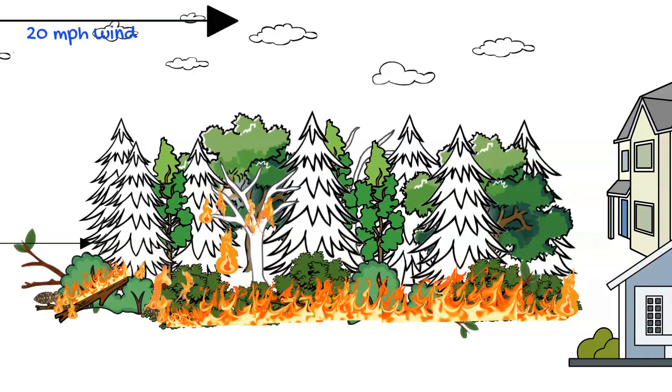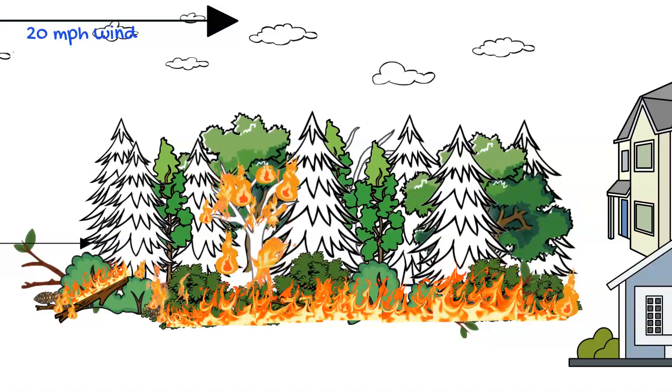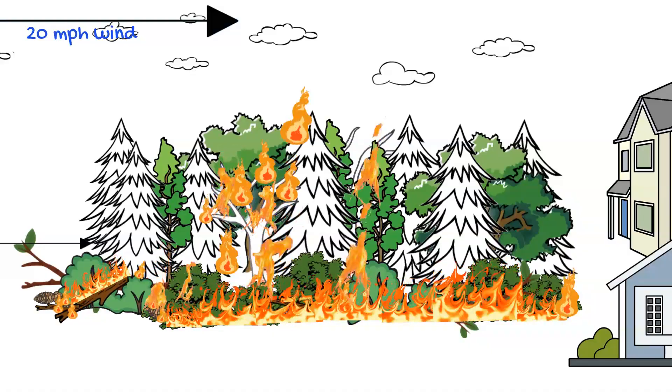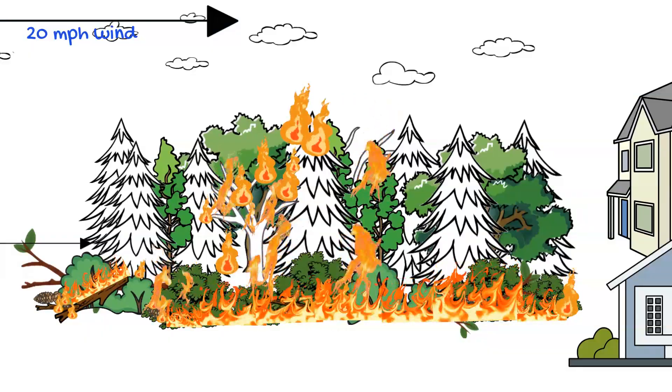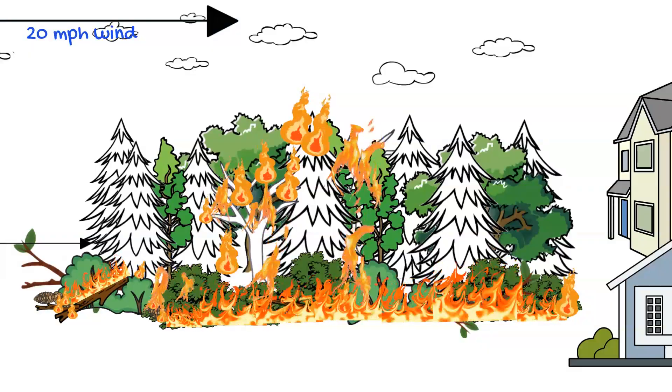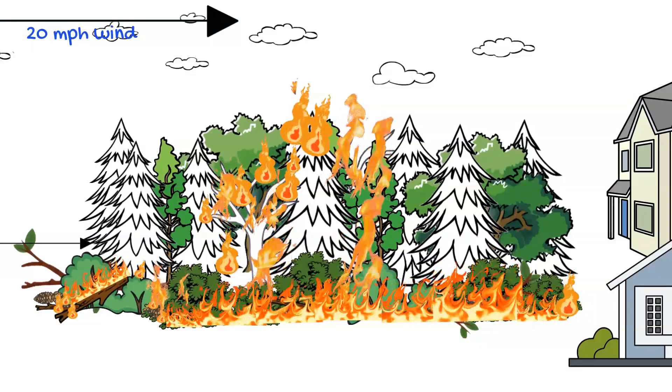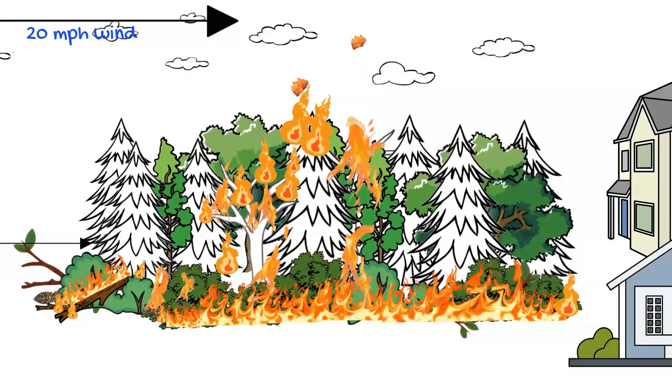Eventually enough energy we've created that you're going to get what we call torching. So one tree is going to ignite and burn. This is actually called passive crown fire. And it is dependent upon the ground fuels to make this occur. If you don't have the heavy fuel loading on the ground, this isn't going to happen.